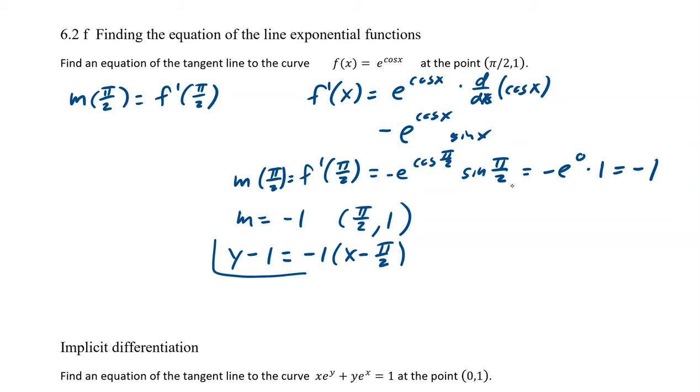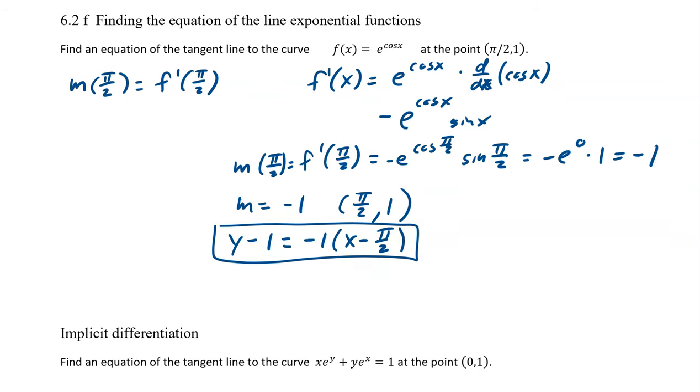And now this is a perfect equation, right? It's slope, point slope form. But if we solve it again, we can put it in slope intercept form. So we end up with y equals negative x plus π/2 plus 1.